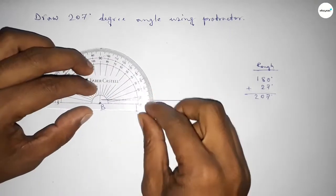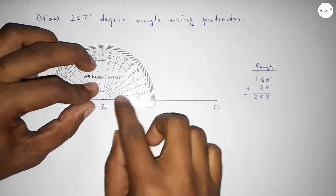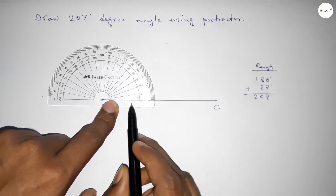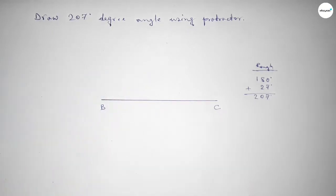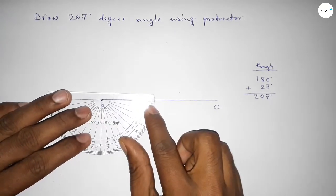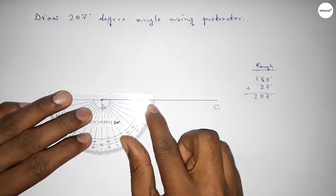First we have to measure 180 degrees. So we put the protractor on point B and count the angle. This is a total 180 degree angle. Then we place the protractor on point B again and count 27 degrees.